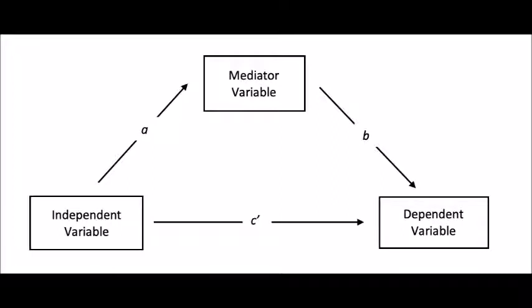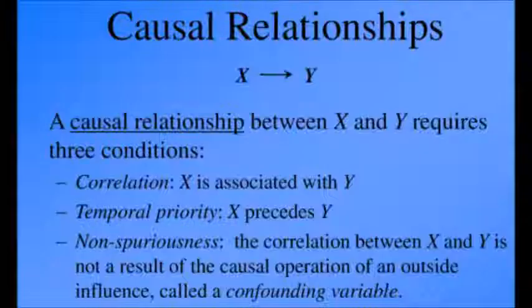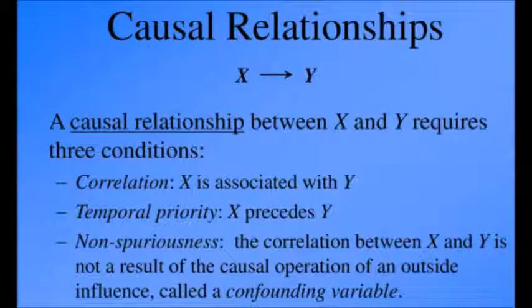As we know, causal relationships require three conditions to be fulfilled. Number one is correlation — that X is associated with Y. Number two is temporal precedence — that X precedes Y. And number three is non-spuriousness — that the correlation between X and Y is not a result of any confounding variable.